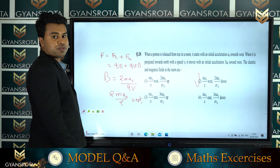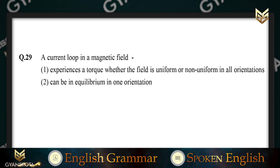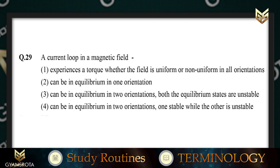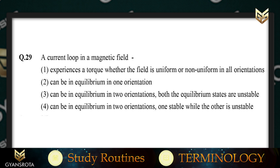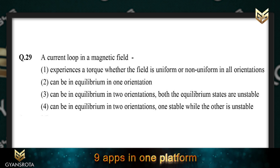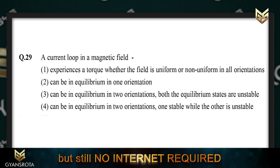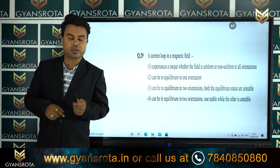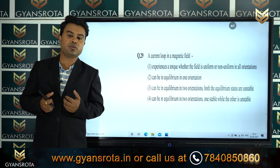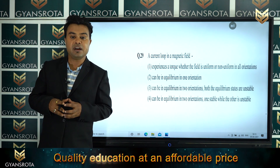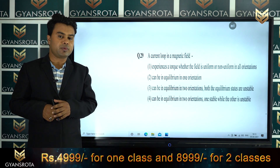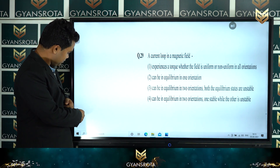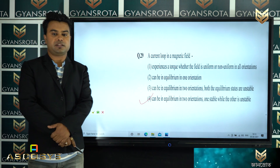Question 29: a current loop in a magnetic field experiences a torque. Analyzing the options: it can be in equilibrium in two orientations. Using the concept of potential energy, when θ = 0° the equilibrium is stable, and when θ = 180° it is unstable. So option 4 — equilibrium in two orientations, one stable and one unstable — is the correct answer.